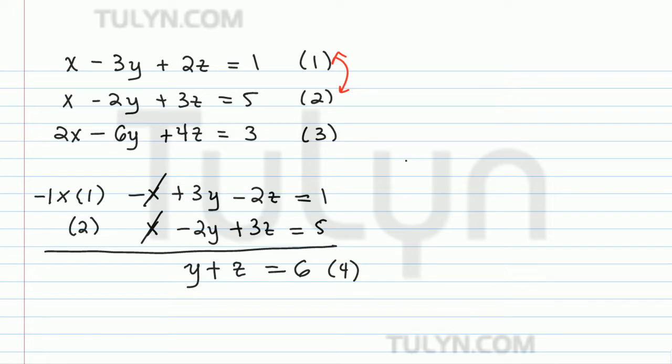Let's write this out to show you what I mean. So multiply negative 2 times equation 1. We're going to get negative 2x plus 6y minus 4z equals negative 2. That's just multiplying negative 2 by every single term. And then equation 3, we're going to write as is. So 2x minus 6y plus 4z equals 3.